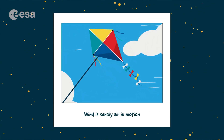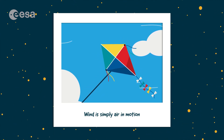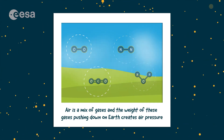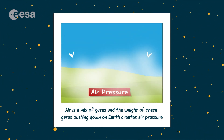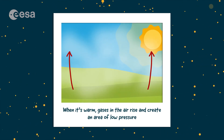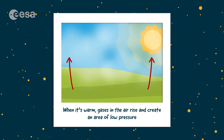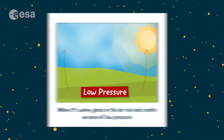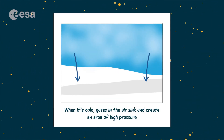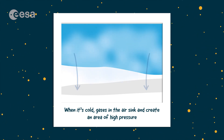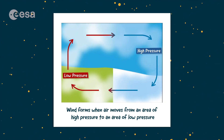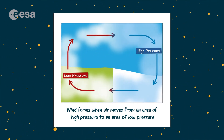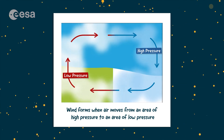Today we learned: Wind is simply air in motion. Air is a mix of gases and the weight of these gases pushing down on Earth creates air pressure. When it's warm, gases in the air rise and create an area of low pressure. When it's cold, gases in the air sink and create an area of high pressure. Wind forms when air moves from an area of high pressure to an area of low pressure.